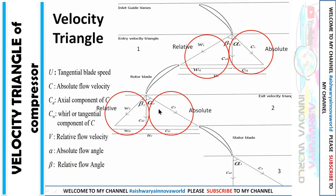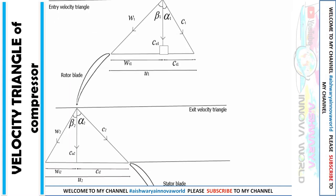Here is a memory trick to remember this sequence: W-beta-alpha-C. W is for the relative velocity, beta is the relative flow angle, alpha is the absolute flow angle, and C is the absolute velocity. This way you can remember them in a series: W, beta, alpha, C. The same follows for region 2. Now I will give a detailed explanation of the formulation of this velocity triangle, which you must know well in order to solve problems.